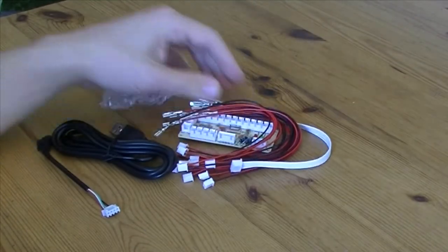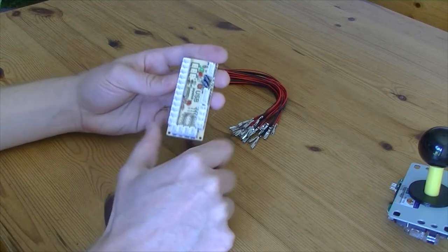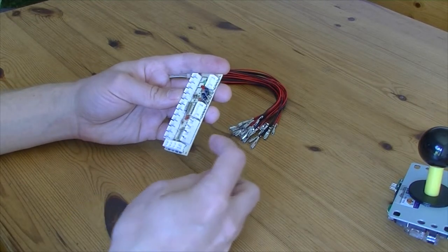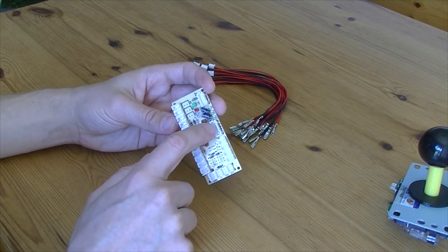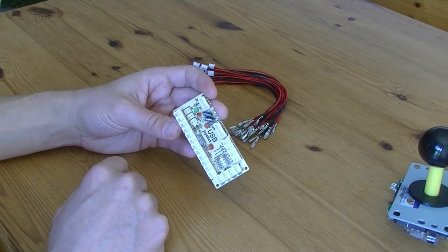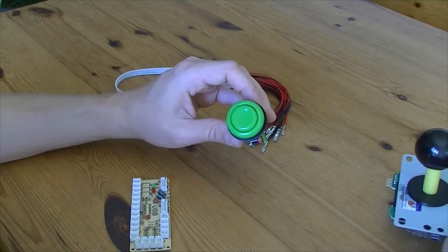What a USB encoder does is basically convert any button press into a USB signal, so you can convert anything into a USB controller. Over here we've got up, down, left, right for joystick input. We could use this little thing in the middle. On the corner we have a space for the USB cable, and at the very bottom we have buttons from 1 to 12.